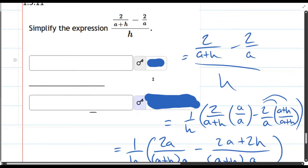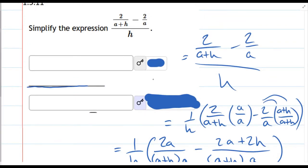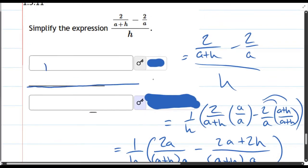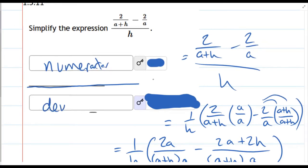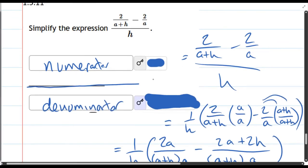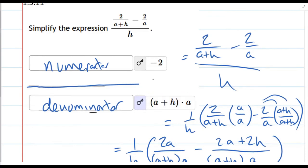It's a little bit weird, maybe not obvious, but this is the fraction line. And so this is the numerator. And this is the denominator. There we go. So we get that negative two on top and the a plus h times a on the bottom.